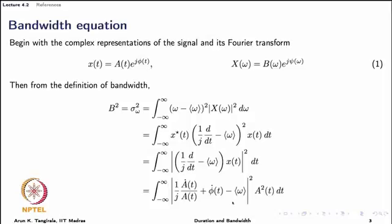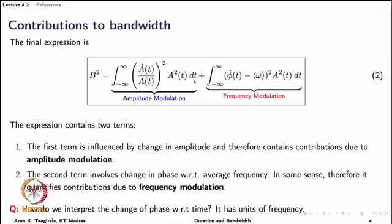This is a complex number: φ̇(t) − ⟨ω⟩ is the real part, and (1/j)(ȧ(t)/a(t)) is the imaginary part — so we are looking at the magnitude squared of a complex number. Taking that magnitude squared yields two terms: the first is (ȧ(t)/a(t))² × a²(t) dt, and the second is (φ̇(t) − ⟨ω⟩)² × a²(t) dt. This is a fundamental equation known as the bandwidth equation, and what remains is the interpretation of these two terms.